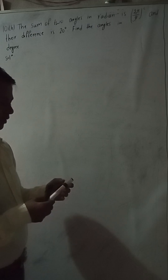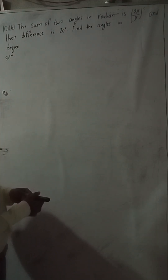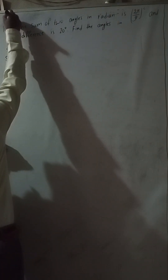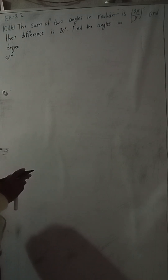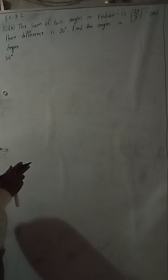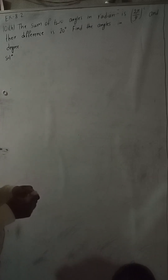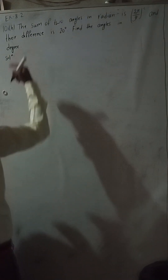Welcome back to Gimbal Sultry YouTube channel. I am going to talk about OPT mathematics exercise 8.2, question number 10B. The sum of two angles in radians is 2π/9 radians and the difference is 20 degrees. We have to find the angles in degree, so we have to convert radians into degrees.